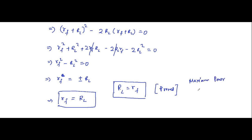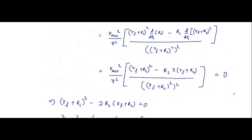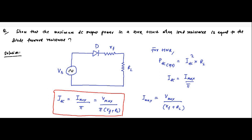This is the same as the maximum power transfer theorem. For maximum power to be transferred to the load resistance, the load resistance should be equal to the source resistance in DC. For AC it becomes the complex conjugate of the load impedance, but we are not discussing that here. So for DC, load resistance should equal the source resistance — same as maximum power transfer theorem — applied here to electronic half wave rectifier circuits.